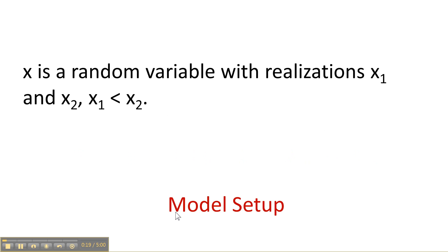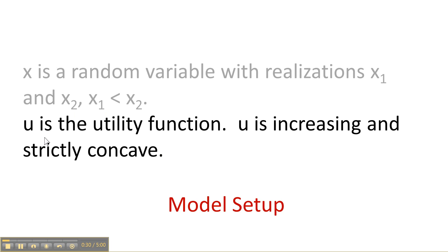Here's the model setup. We have a random variable x with two possible outcomes x1 and x2. x1 is the smaller of the two values. U is the utility function, the utility you get from x. U is increasing—the more x the better off you are—and it's strictly concave, and we're going to show that means risk aversion.